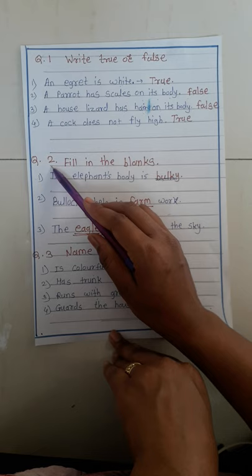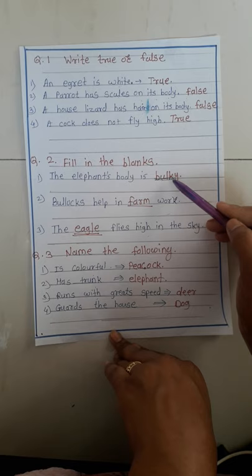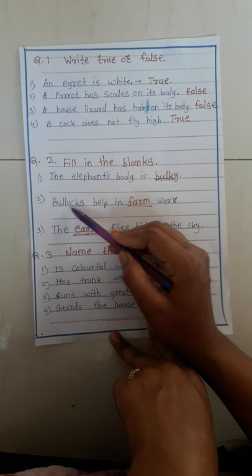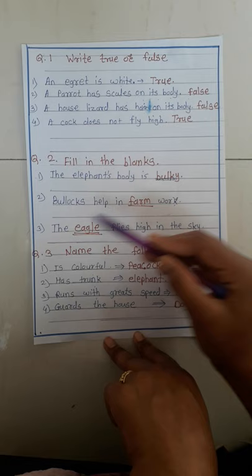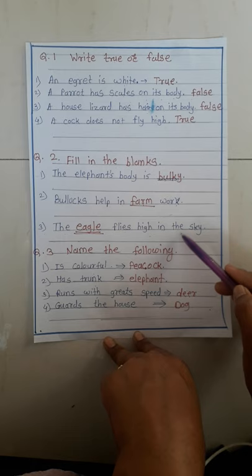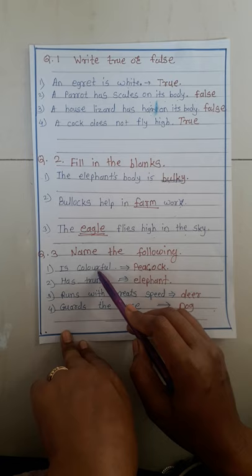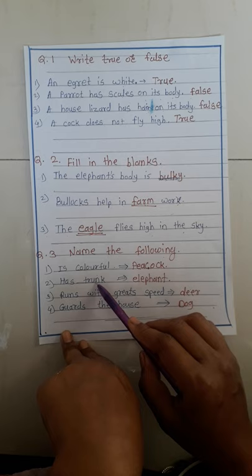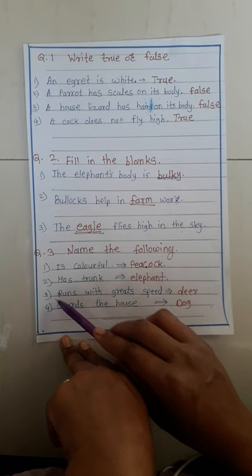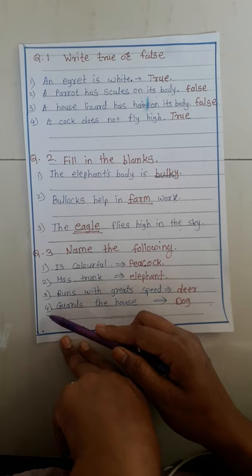Fill in the blanks: The elephant's body is — answer: bulky. Bullocks help in — answer: farm work. The eagle flies high in the sky. Name the following: colorful — answer: peacock; has a trunk — answer: elephant; runs with great speed — answer: deer; guards the house — answer: dog.